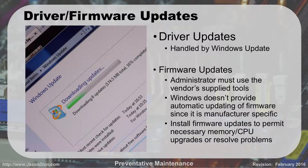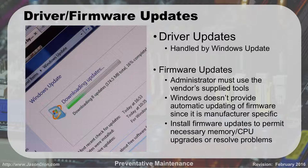Driver updates are now handled by Microsoft Update — it'll download security updates and driver updates for you. But sometimes the ones from Microsoft may not be the ones you want; you may want the ones from your particular manufacturer for your network card or video card, so you might go separately to their website. Additionally, we have firmware updates, which the administrator can apply using vendor-supplied tools. Firmware lives in things like the BIOS, RAID controllers, optical drives, and hard drive controllers. Windows does not do automatic updating of firmware — it's very manufacturer-specific, and you have to install firmware updates to permit necessary memory and CPU upgrades and resolve BIOS problems.